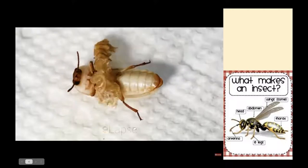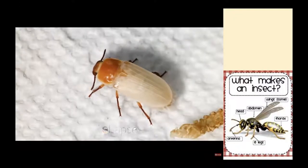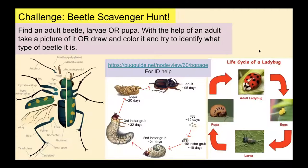There's our adult beetle. It will take a couple of days for it to get its color — that typical brown or black color you saw in the mealworm bin. So we know that these guys are indeed insects — they have six legs and two antennae. Here's a quick challenge: a beetle scavenger hunt. Sometime when it's nice and sunny, go outside and find an adult beetle, a larva, or a pupa. With the help of an adult, take a picture or draw and color it, and try to identify what type of beetle it is. A good website is bugguide.net. Common beetles you might see include June bugs, ladybugs, and lightning bugs — those are all beetles.